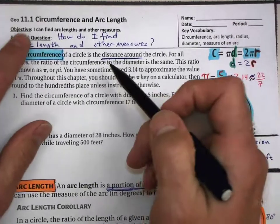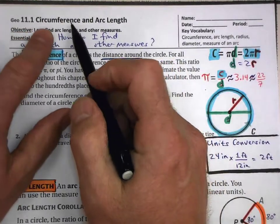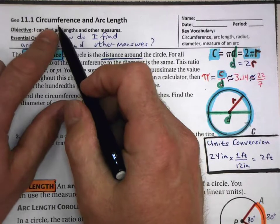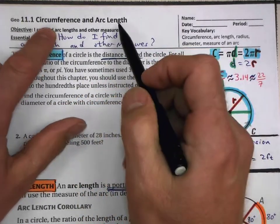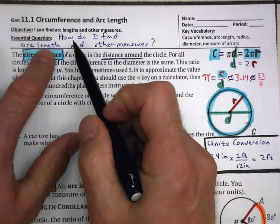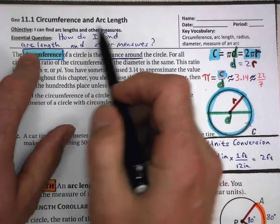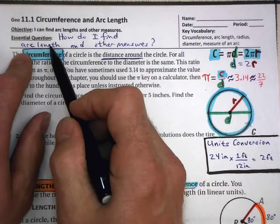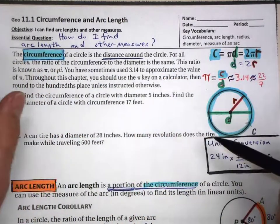Welcome to 11.1. We're looking at circumference and arc length. Our essential question is: how do I find arc length and other measures?